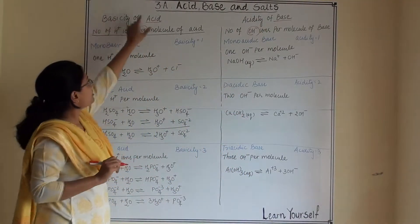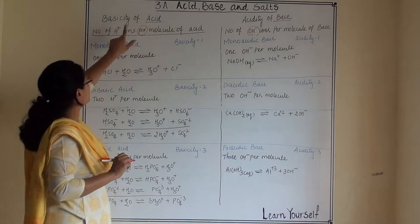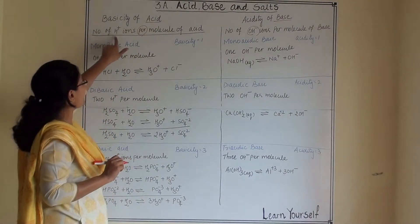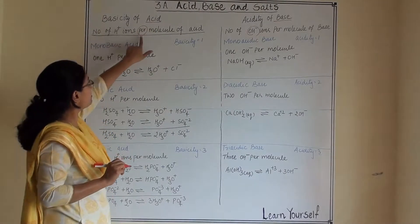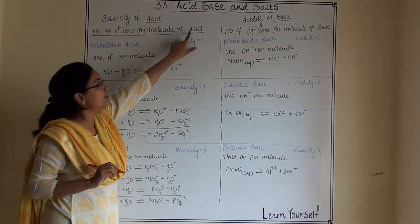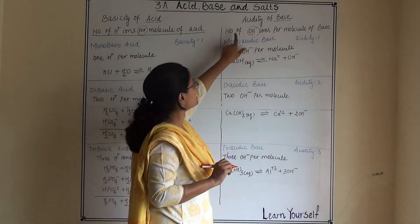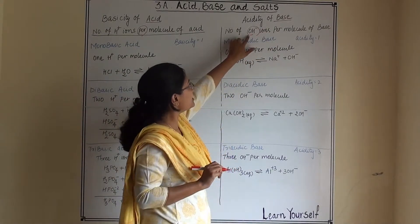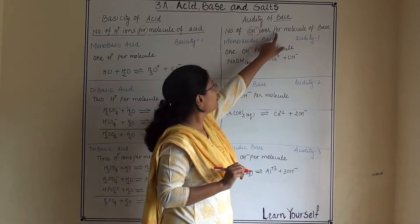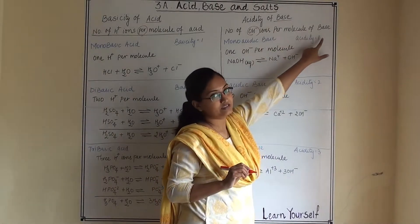Basicity of acid means number of H+ per molecule of acid. Acidity of base means number of OH- per molecule of base.